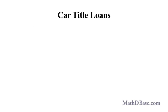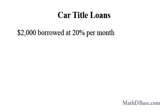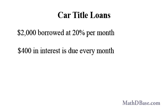Some pawn shops offer car equity or car title loans. Signing a contract using your car as collateral, you can get a $2,000 loan or more if you agree to pay 20–25% interest per month. As long as the monthly interest is paid, the principal can remain outstanding. At 20%, at least $400 — $2,000 divided by 5 — interest payment is due every 30 days.